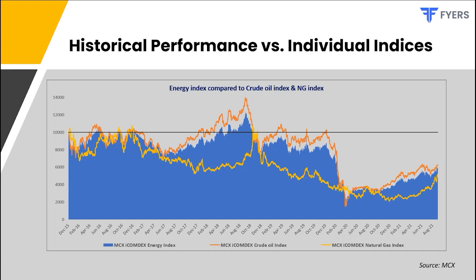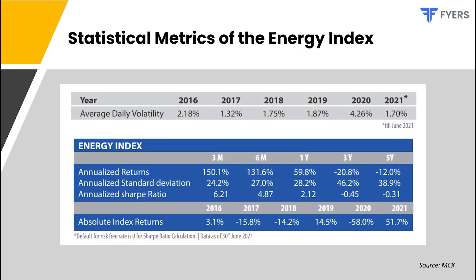This chart shows the historical performance of the ICOMDEX Energy Index, Crude Oil Index, and Natural Gas Index. Given how heavily weighted crude oil is in the index, movements in crude oil have a strong influence on the index. While the index struggles from a long-term perspective, it has given strong returns over the medium term, thanks to a multi-month rally in the price of crude oil and natural gas.